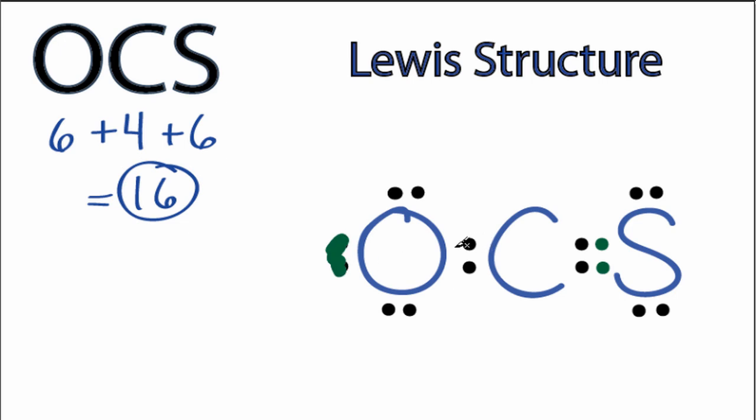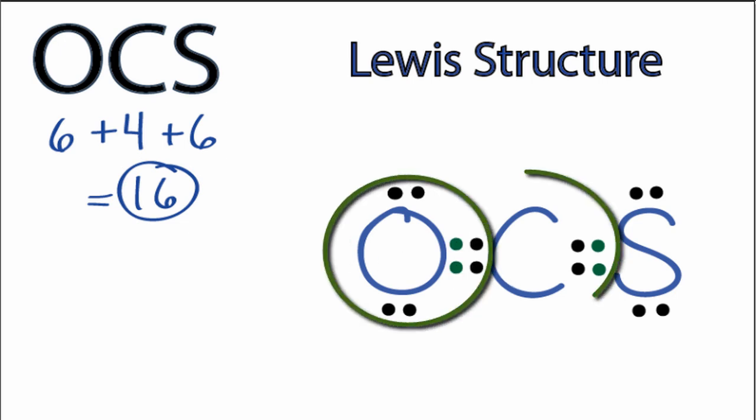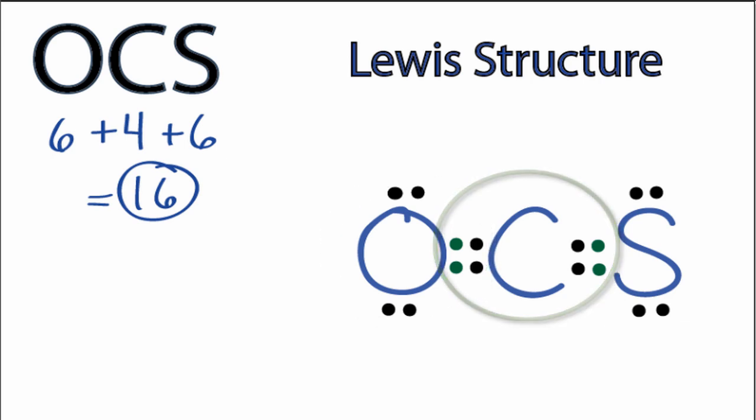Let's take these two here and move them to the center as well. Now the oxygen has eight valence electrons, but the carbon in the center also has eight valence electrons, so it has an octet. Again, we're still using only the 16 valence electrons available for the OCS Lewis structure.